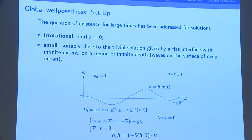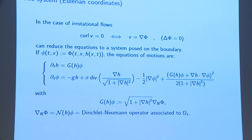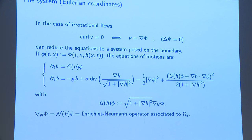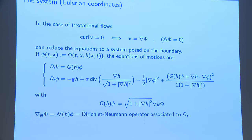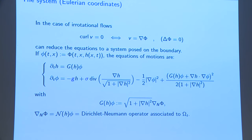If the flow is irrotational, then v will be given by a potential which is harmonic. You can reduce everything to studying the trace of this potential, restricting it to the boundary described by the curve (x, h(x)). You can write down the equations: the previous equation, since v is now the gradient of a harmonic function, becomes what we call the Dirichlet-to-Neumann operator.